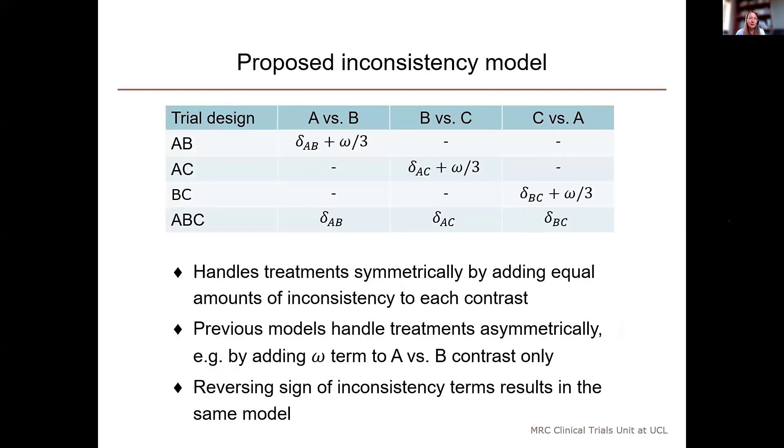In our proposed model, we're adding an inconsistency term to the ABC loop to allow each of the underlying treatment contrasts to differ between the two-arm and three-arm trials. This model handles the treatments symmetrically by adding an equal amount of inconsistency to each contrast in the loop.